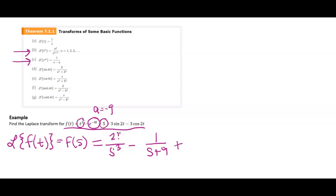Plus five doesn't have a t with it, so it's going to be a variation of the constant transform. We have five times the Laplace of one, which gives us five over s.